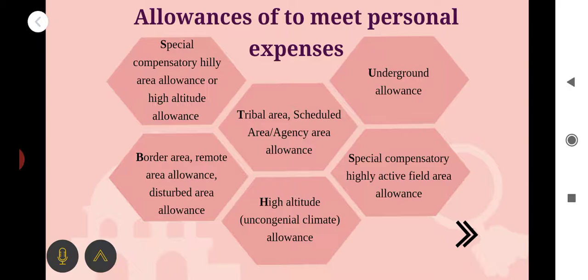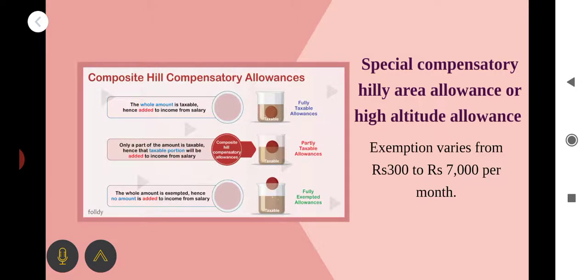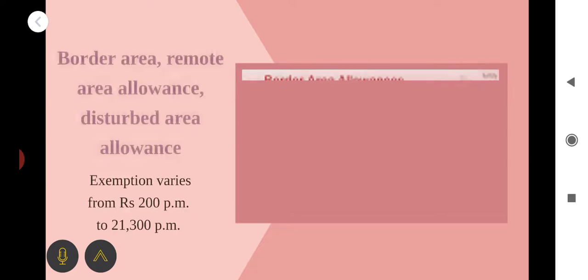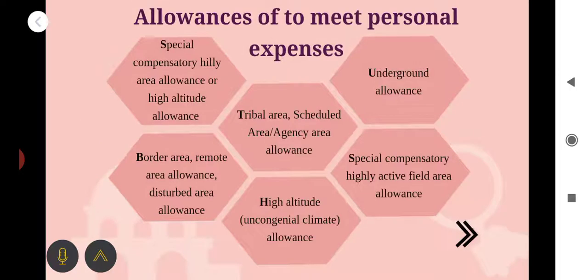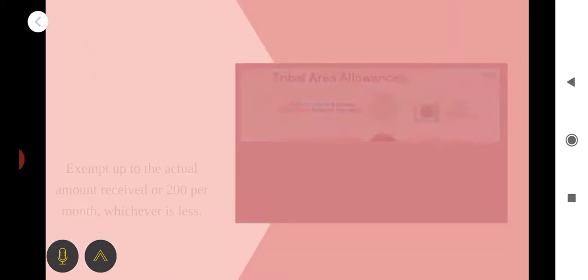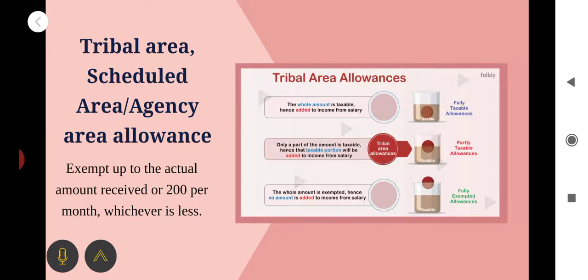Many allowances are shown in the textbook. Special compensatory hill area allowance — the exemption varies from Rs. 300 to Rs. 7000 per month. Border area allowance — exemption varies from Rs. 200 to Rs. 21,300 per month; details are available in the textbook. Tribal area allowance — exempted up to the actual amount received or Rs. 200 per month, whichever is less, applicable to tribal, scheduled, or agency areas.